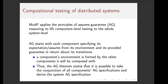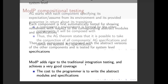So if you have the assume-guarantee for each component, and the guarantees of B and C combined satisfy my assume specifications, then you can bank on my guarantees as well. That's what the assume-guarantee theorem says: if each component's assume is satisfied by the guarantees of the other components, the resulting guarantee for the composed system is all of the guarantees of all components — A is guaranteed, B is guaranteed, C is guaranteed together. Thus the AG theorem states it is possible to take the conjunction of all components' AG specifications and write the system AG specification.